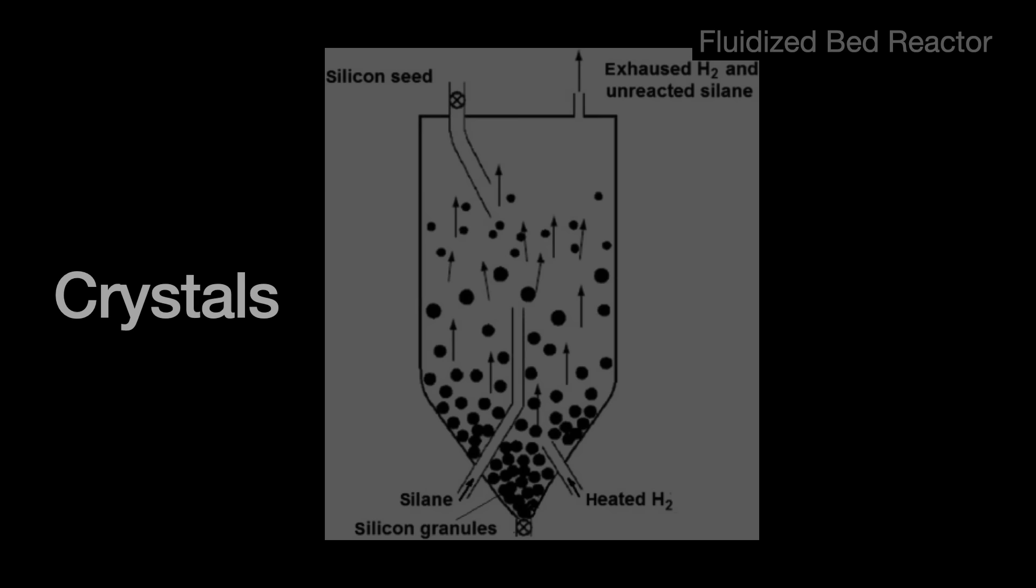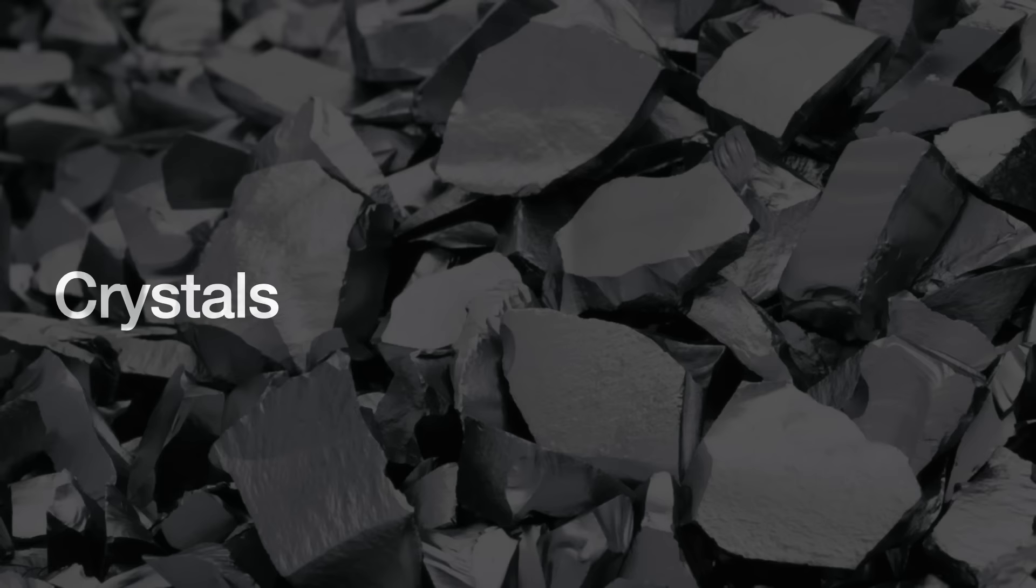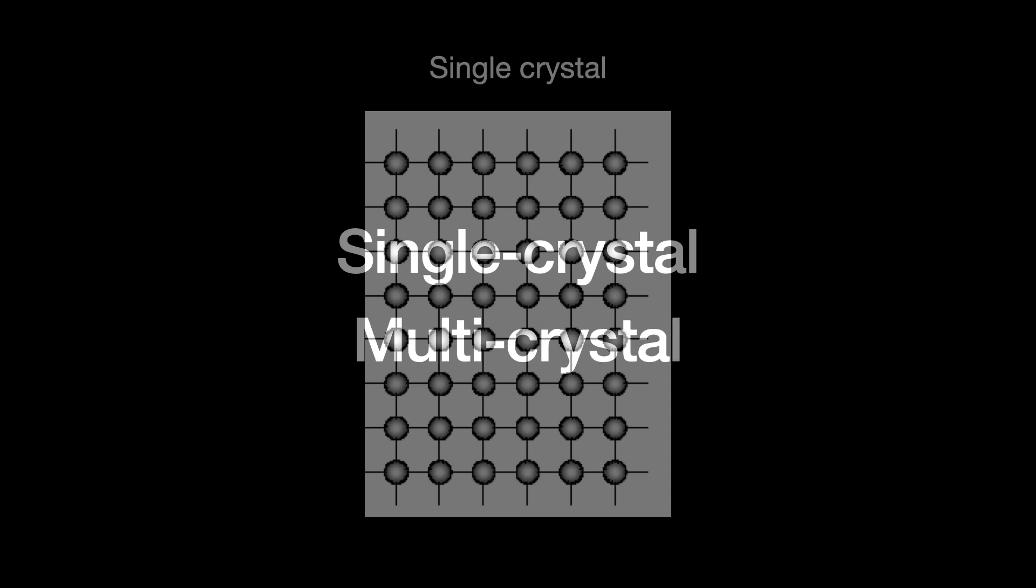At this point, the polysilicon is still in chunks. It needs to be turned into a crystal and cut into wafers before you can make solar cells and cell modules. You can make two types of crystals: single crystal and multi-crystal silicon. I have heard the latter referred to as polysilicon as well. Here, I will add the crystal modifier to differentiate from the chunks and the crystals.